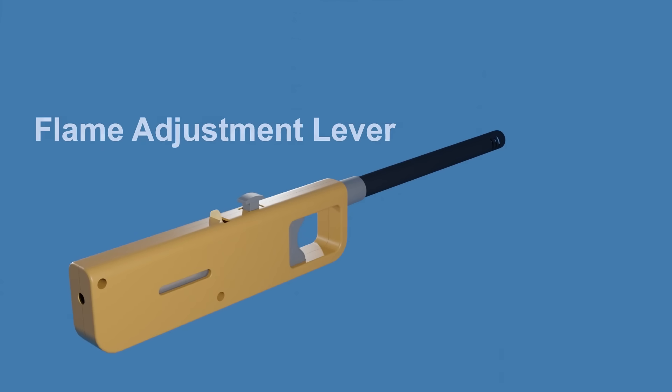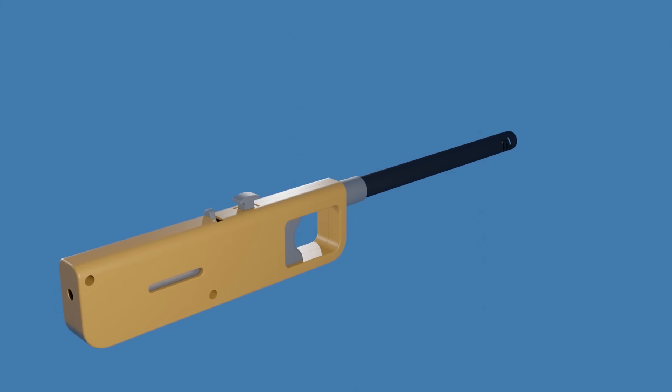This is the flame adjustment lever, which allows you to control the size of the flame by regulating the flow of gas. Moving the lever towards the plus mark will increase the flame height while moving it towards the minus mark will lower it.